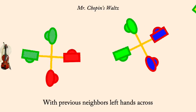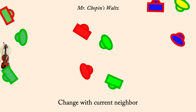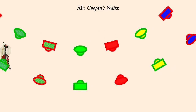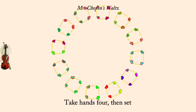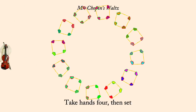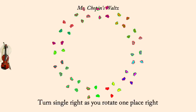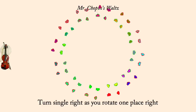Neighbor change. Hands four and set. Turn single, one place, right. Circle left, three quarters.